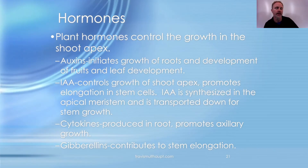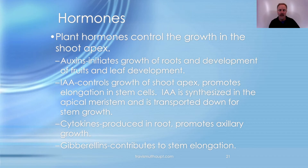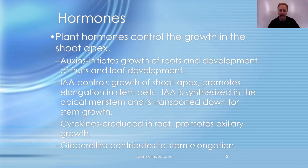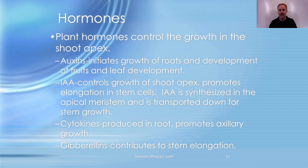The IB wants you to know several hormones. Auxins initiate the growth of roots and development of fruits and leaves. IAA — indoleacetic acid — controls growth of the shoot apex and promotes elongation of stem cells. It's synthesized in the apical meristem and transported through the phloem throughout the plant. Cytokinins are produced in the roots and promote branching and axillary growth. Gibberellins also contribute to cell elongation.